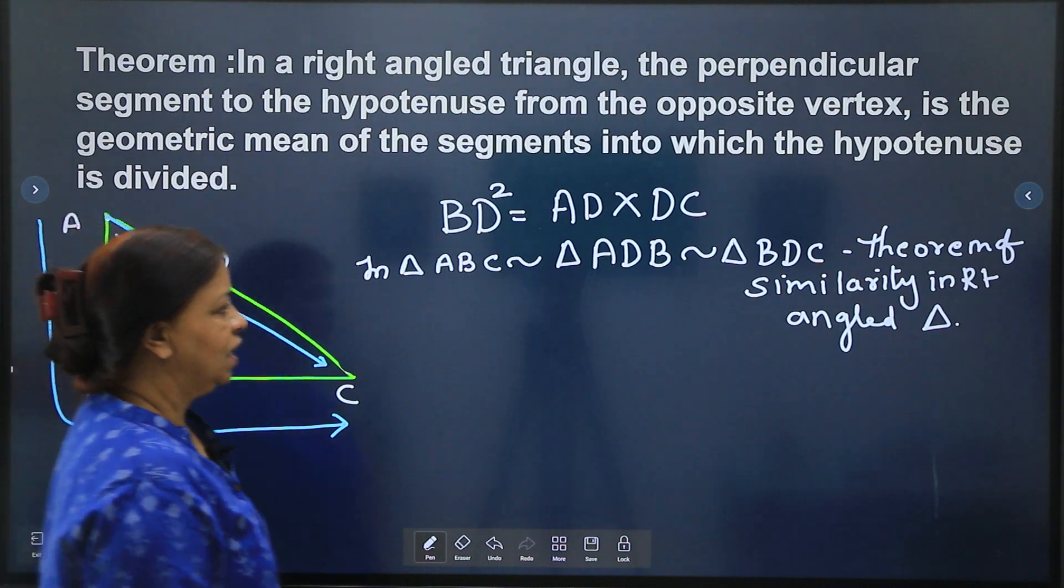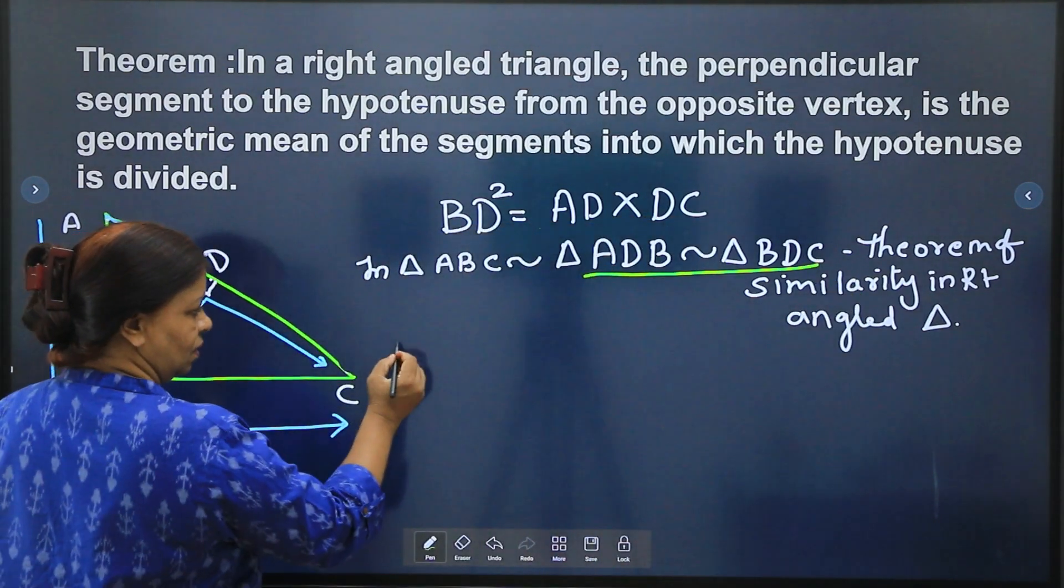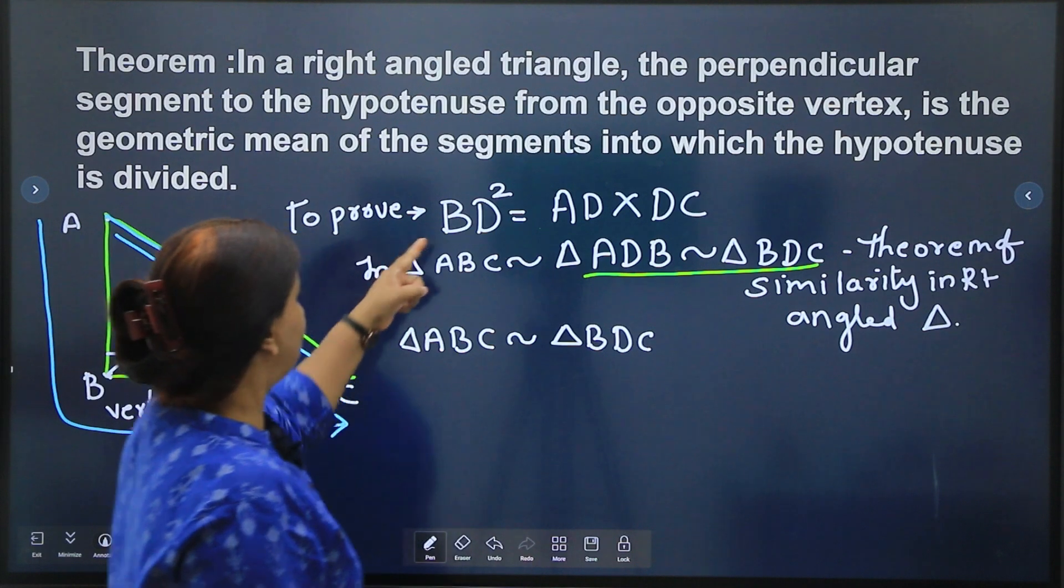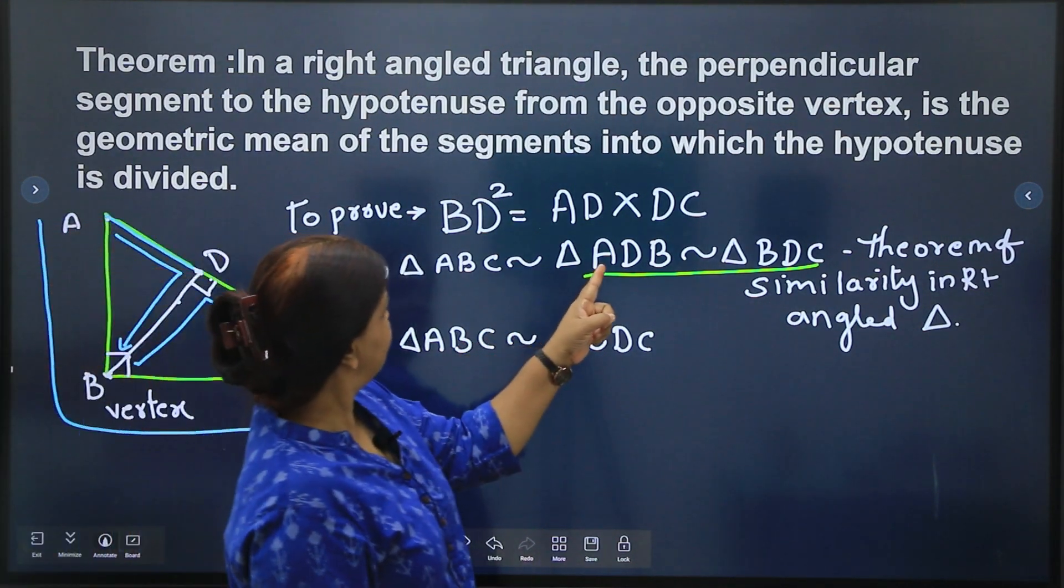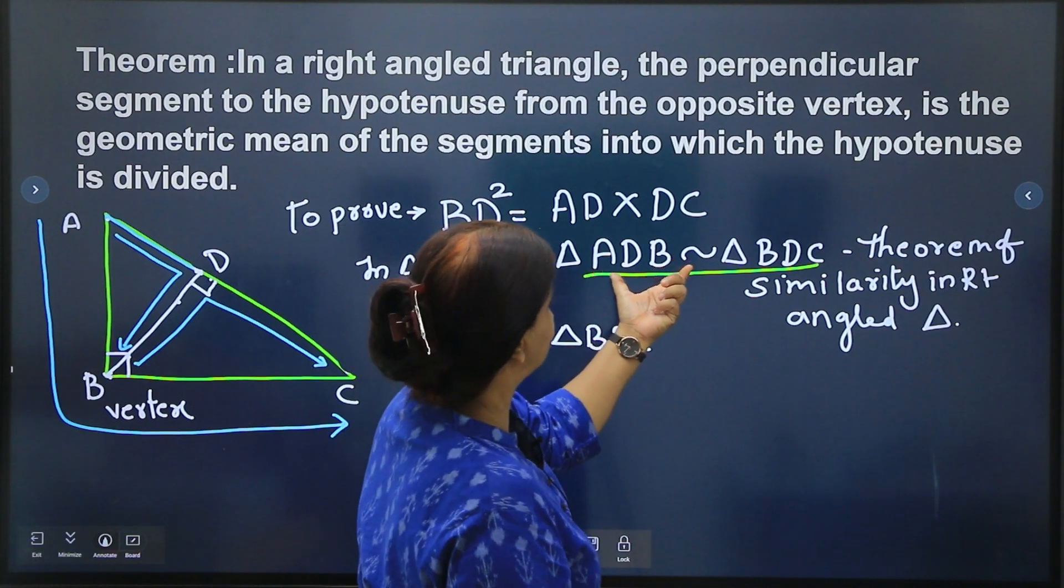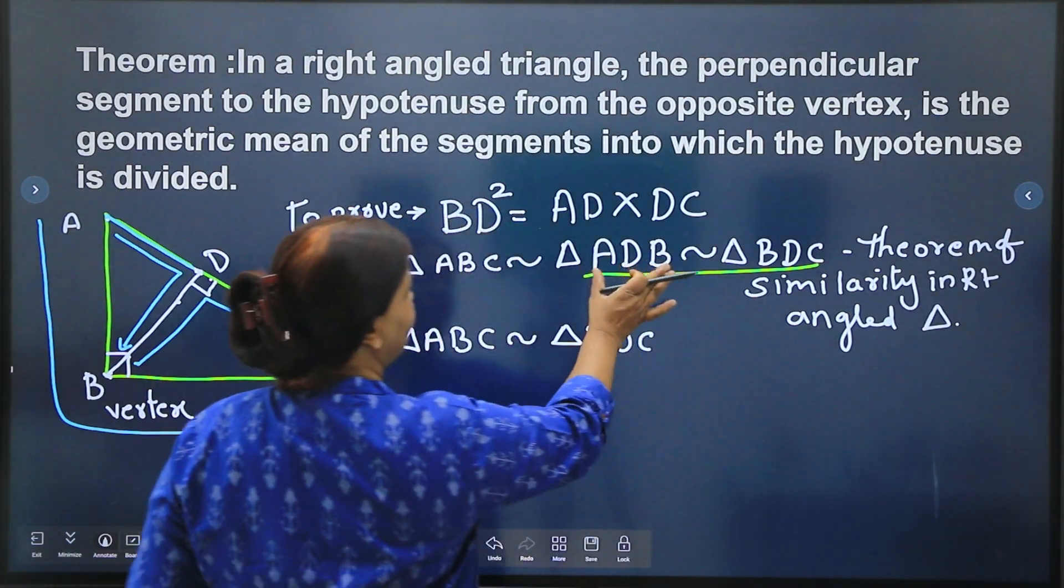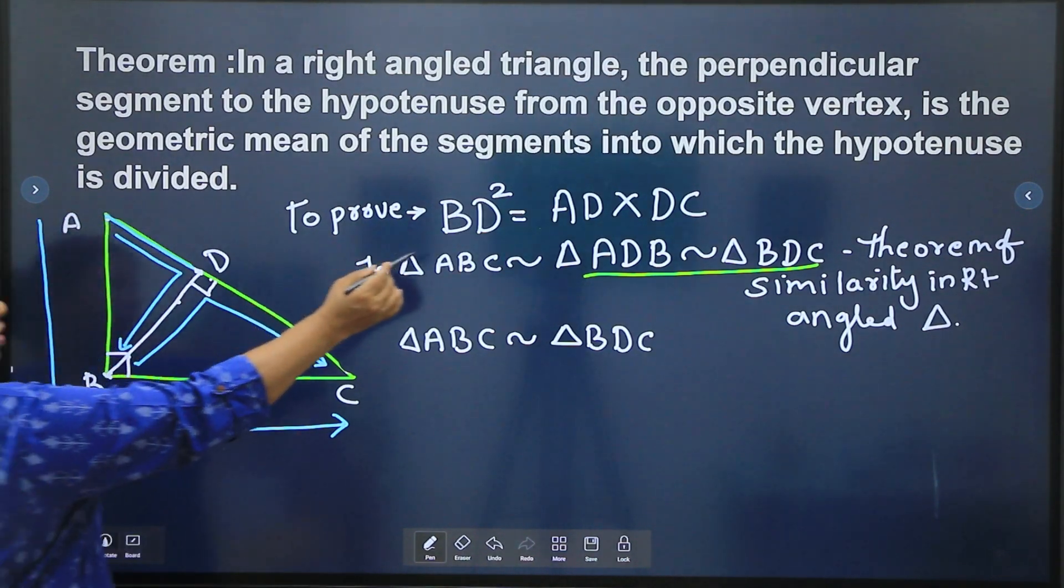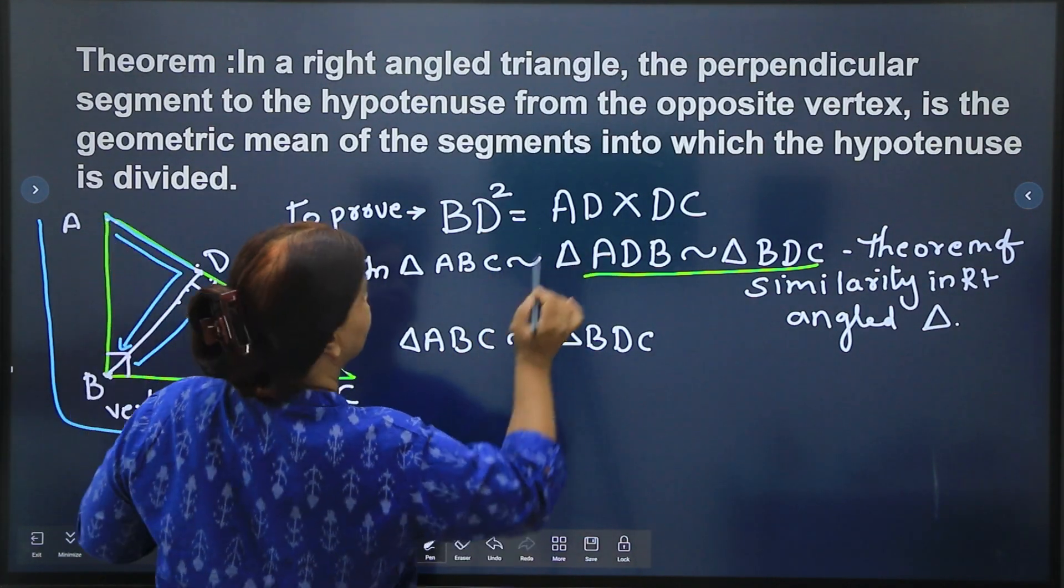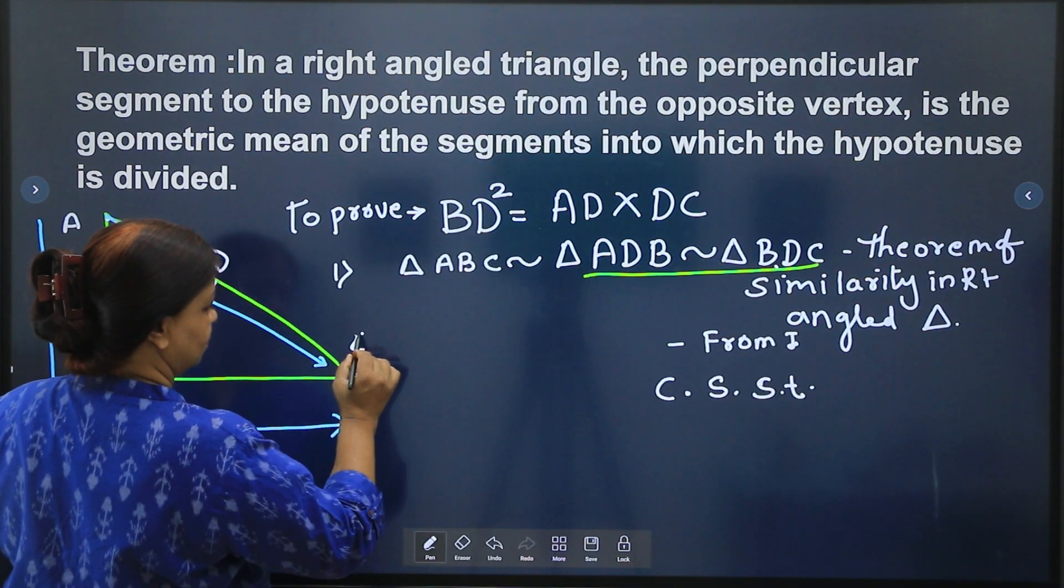Now we will be taking only this sequence. Triangle, why we will be taking ADB and BDC? Because we want to prove BD square and BD is here. AD is here and ADB is in small triangle, and DC is also in small triangle. Clear? So therefore we will be taking this, not ABC, because BD is here, ADB is here in this small triangle, ADC is in this small triangle. That is the reason we will be taking these 2 triangles. Clear?